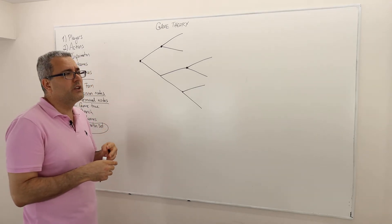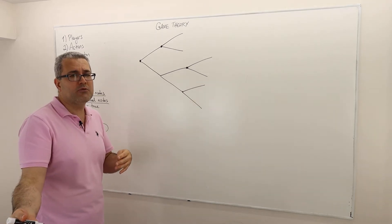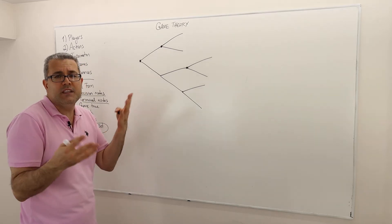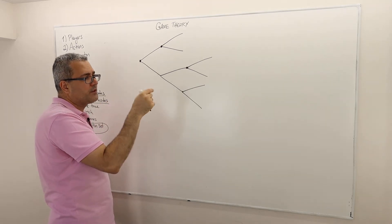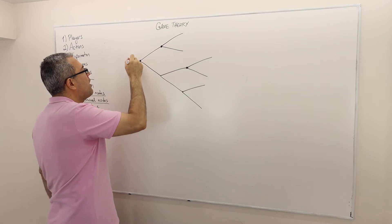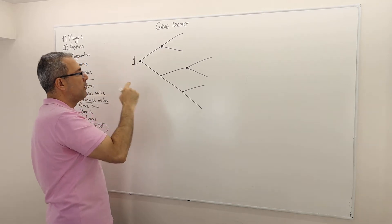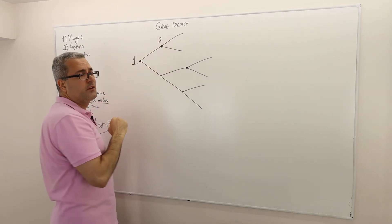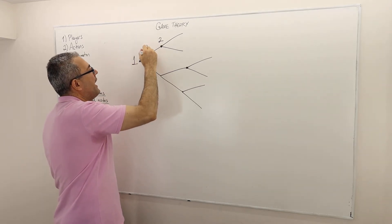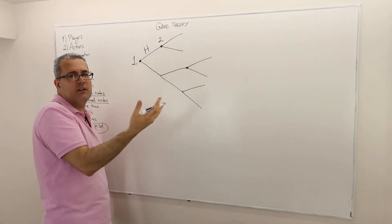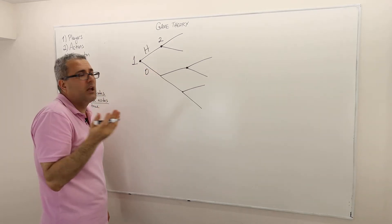For the actions, we don't really write long action names like 'Hedge Fund' or 'open a restaurant in Richmond Hill.' Instead, we call them actions A, B, C, D, whatever. So here, I'm going to call Mr. Brown Player One. The hedge fund I'll call H, and the opening a restaurant I'll call O — any letter you like.